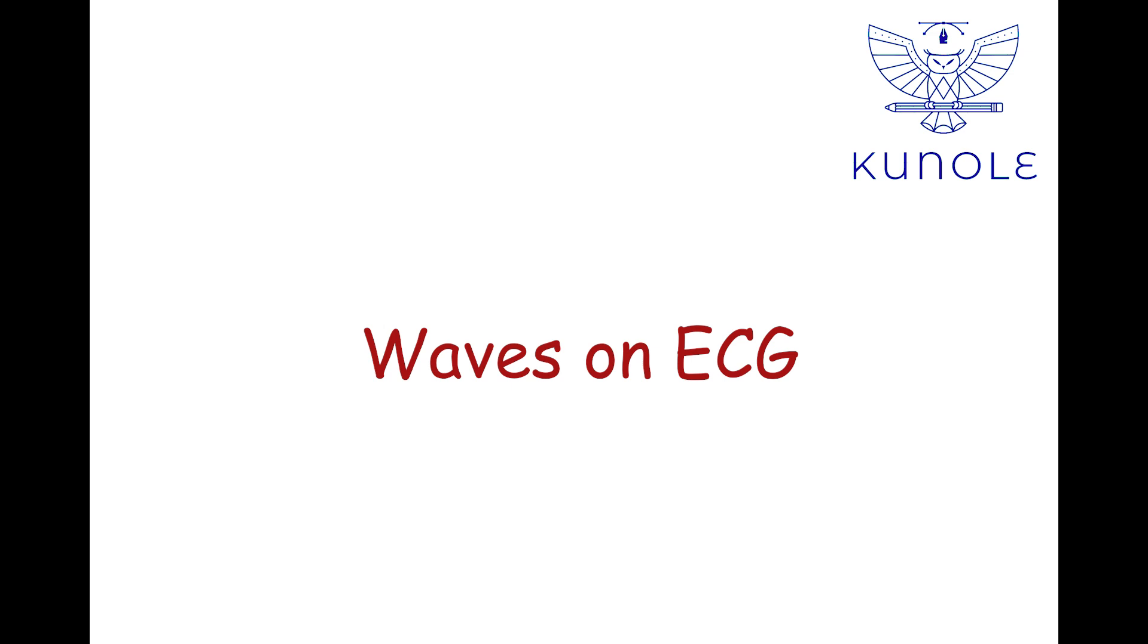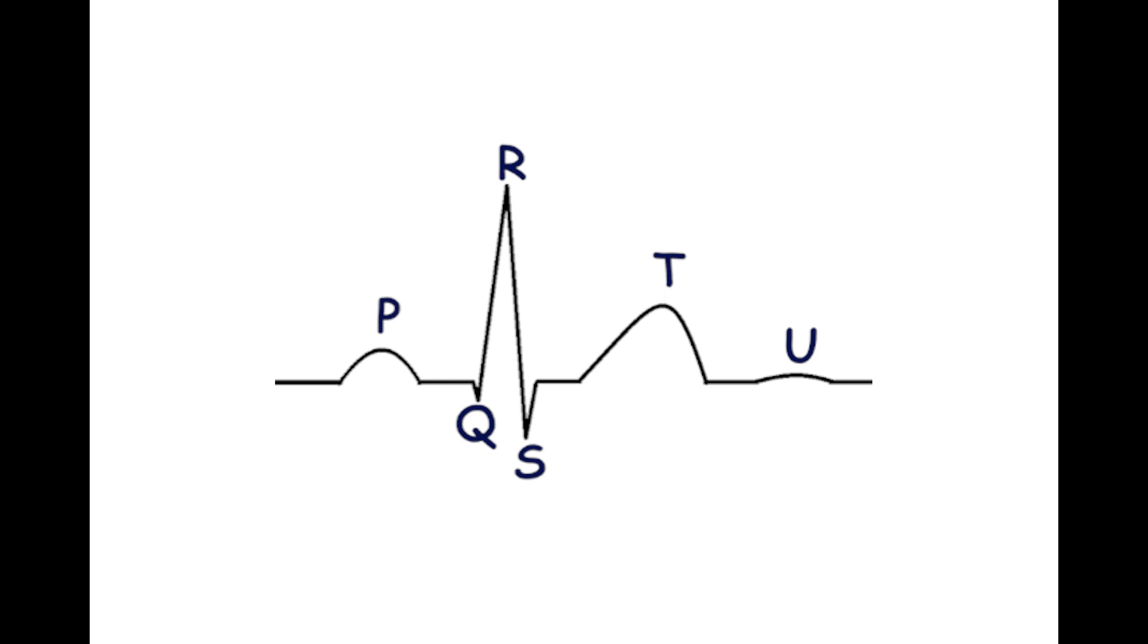In this video we will talk about the waves on ECG. Six letters, P, Q, R, S, T, U, are used to signify deflections on the ECG trace.